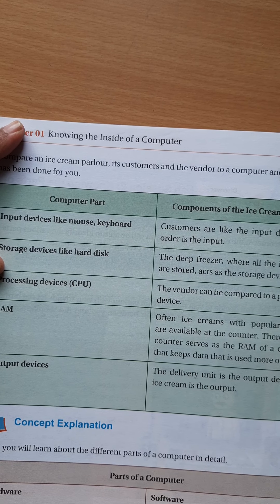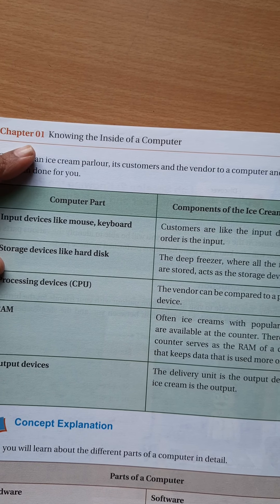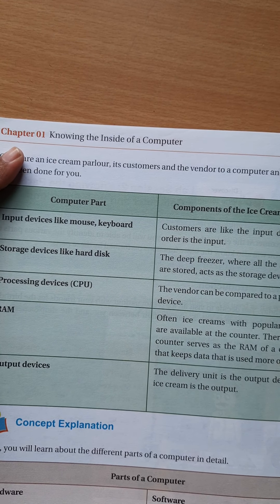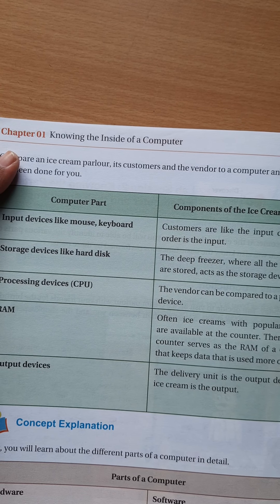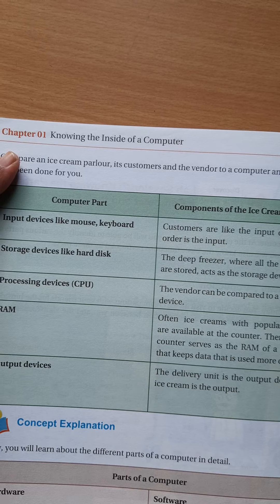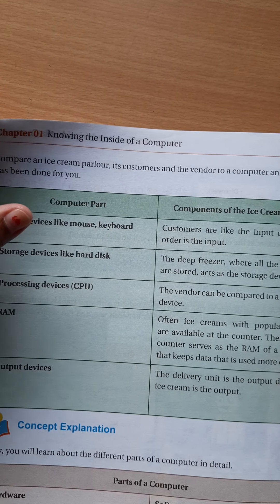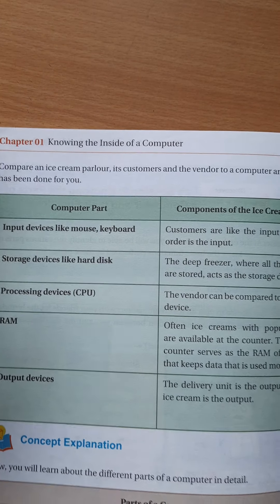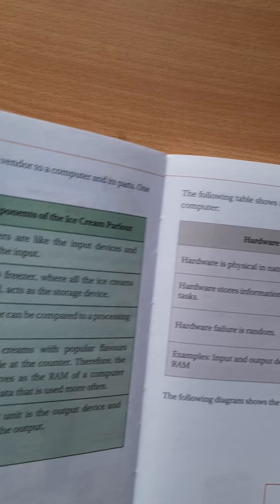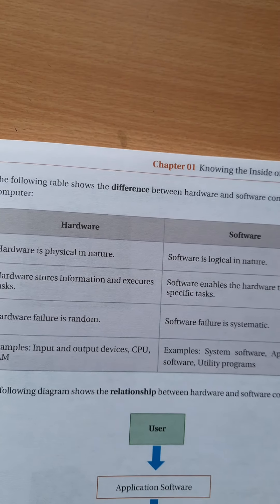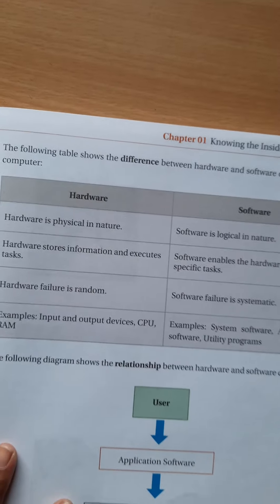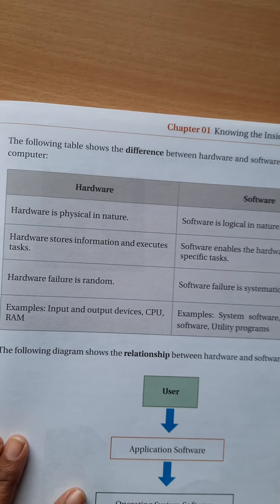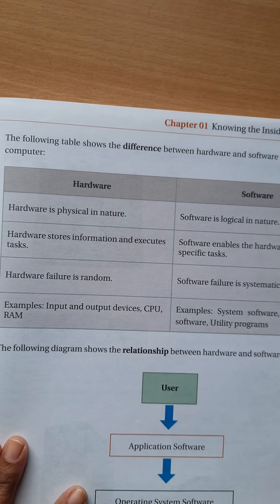So we can get ice cream as the output, and in terms of computer parts, output devices are the monitor, printer, and so on. Now we will look at a difference table — hardware and software.